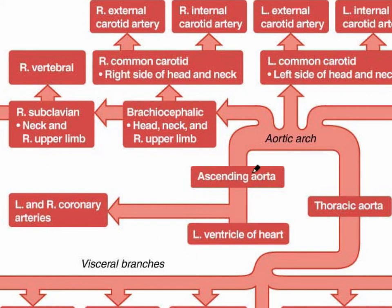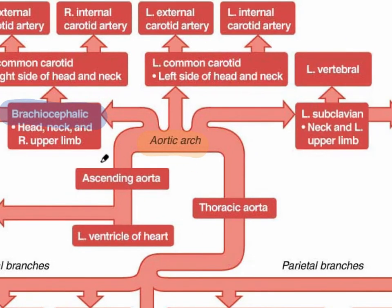The aorta then goes to the system via the ascending aorta, which forms a curve called the aortic arch. The three main branches of the aortic arch are the brachiocephalic trunk — also called the brachiocephalic artery in some textbooks, though 'trunk' is probably the best description since it branches — the left common carotid, and the left subclavian artery.